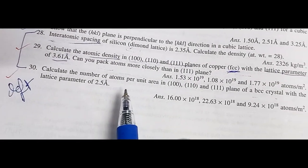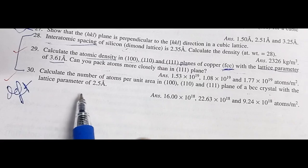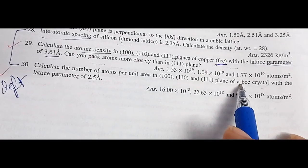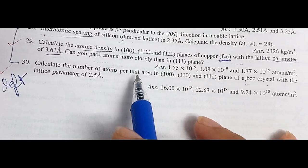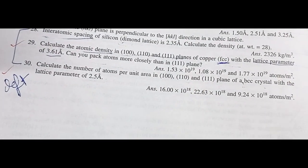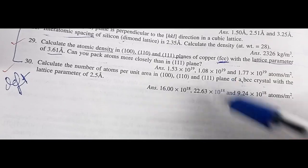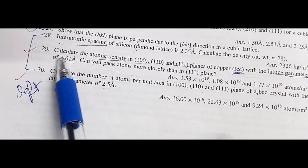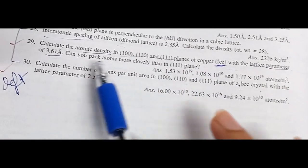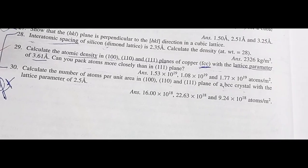Here is the problem: calculate the number of atoms per unit area in the 100, 110, and 111 planes of a BCC crystal with a lattice parameter of 2.5 Ångströms. We are given the lattice parameter of a BCC crystal and we need to find the number of atoms per unit area. They haven't clearly used the word 'planar density,' but the units — atoms per unit area — confirm that this is planar density.